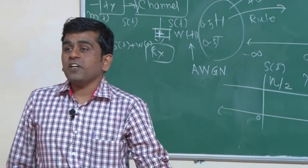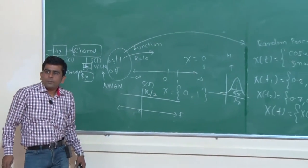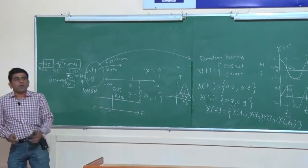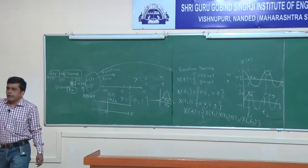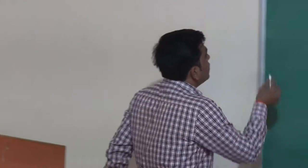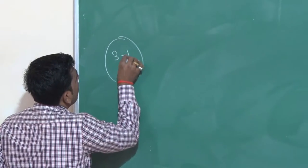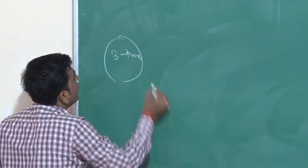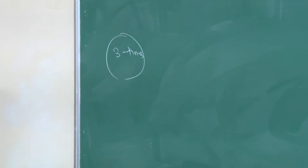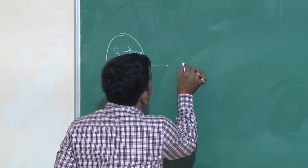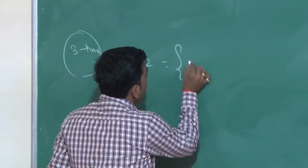We are having two definitions for this random variable. Now we have to see some examples. Write down the first example. So we are having experiment: one coin is given, we have to toss it three times.